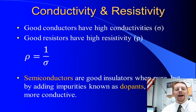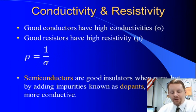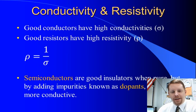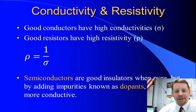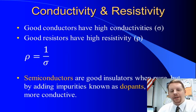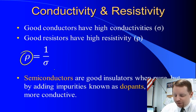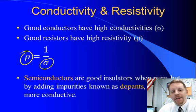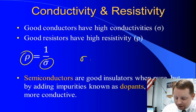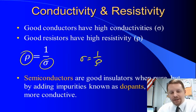We describe how good a conductor or insulator is by talking about its conductivity or its resistivity. Conductors have high conductivity and insulators have very low conductivity. The inverse of conductivity is called resistivity — insulators have very high resistivity while conductors have very low resistivity. The symbol for resistivity is the Greek letter rho, and the symbol for conductivity is the Greek letter sigma. So resistivity is 1 divided by conductivity, or conductivity is 1 divided by resistivity.